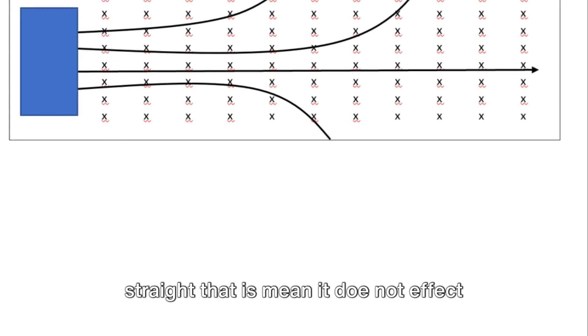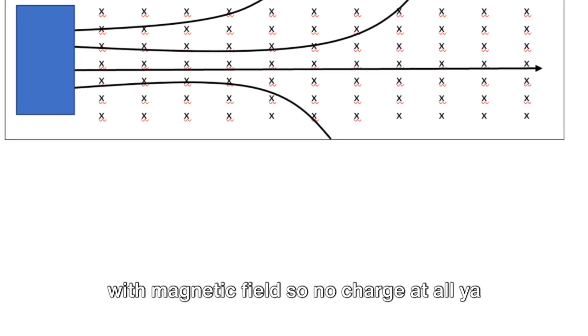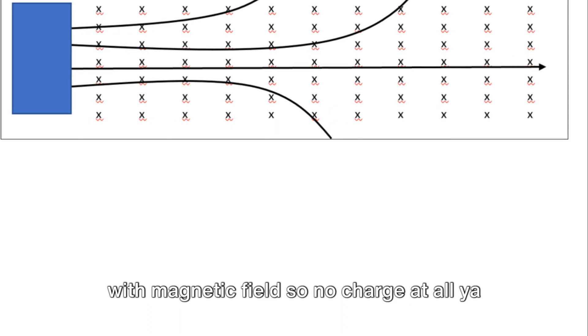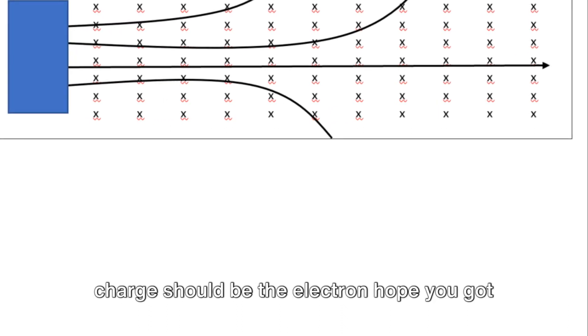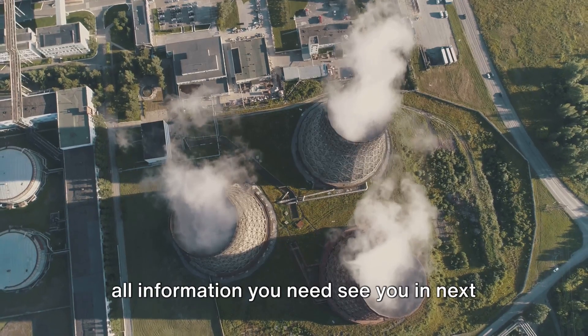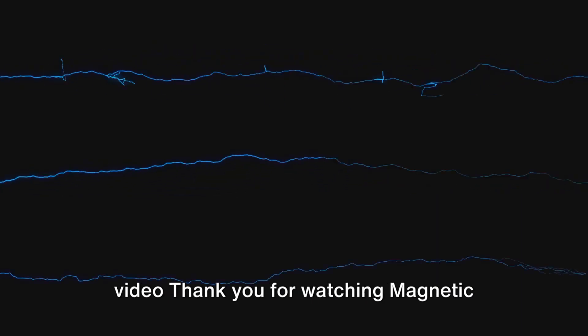Now the third path continues straight. That means it does not affect with magnetic field. So no charge at all, you are right, it is neutron. And the fourth charge should be the electron. Hope you got all information you need, see you in next video.